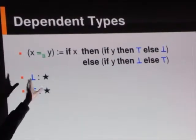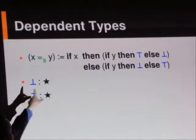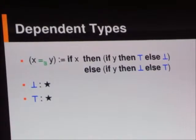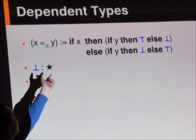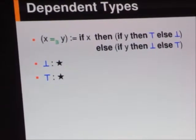And so, in order for this expression to be legit, we need to give these logical symbols types. And so, we'll just do that. We'll say that bottom and top have the type star, which means the type of types.